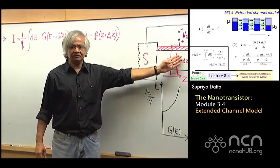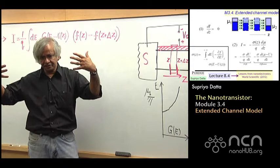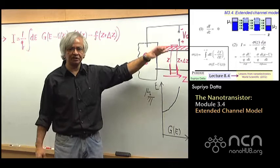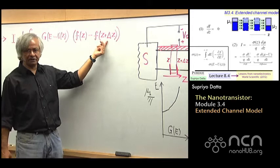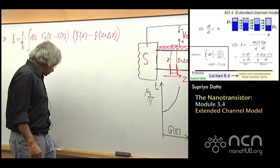On the other hand, if you look inside the channel, that can be very far from equilibrium. Because you've got these two contacts trying to dictate two different types of equilibrium, so it does something in between. This middle region usually is way out of equilibrium.